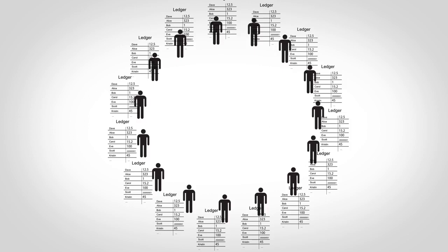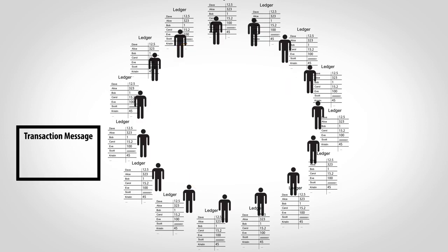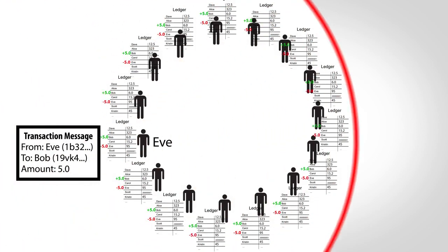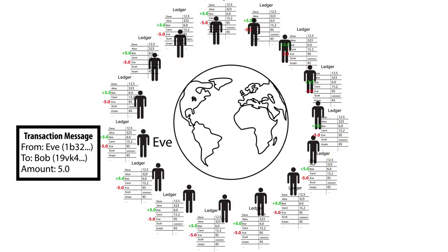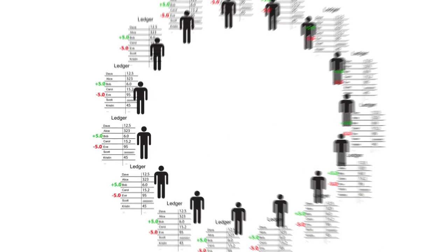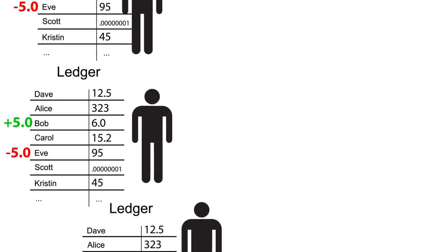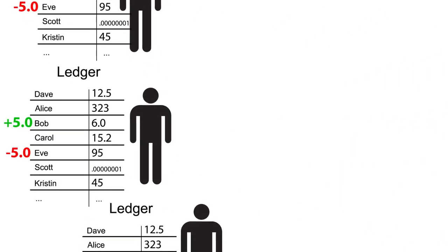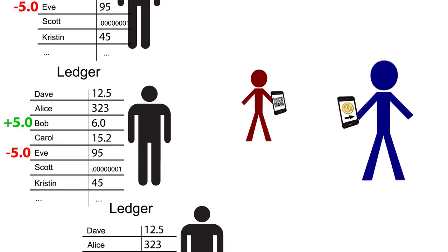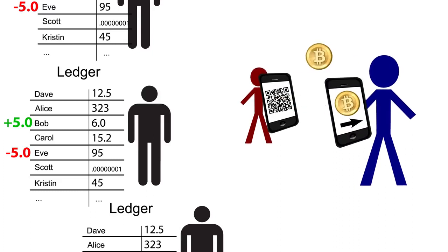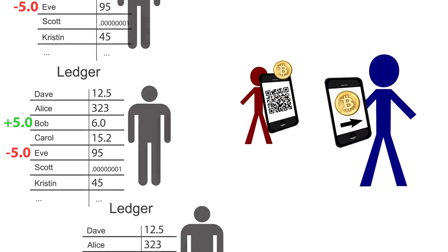If everyone maintains their own ledger, how are all the ledgers kept in sync as money is transferred? At a basic level, when you want to send money, you simply tell everyone else by broadcasting a message with your account number, the receiver's, and the amount. Everyone across the entire world then updates their ledger. As a quick aside, I'm describing how Bitcoin works for power users — people who help maintain the system. You can also just use the system to send and receive money without maintaining a ledger.